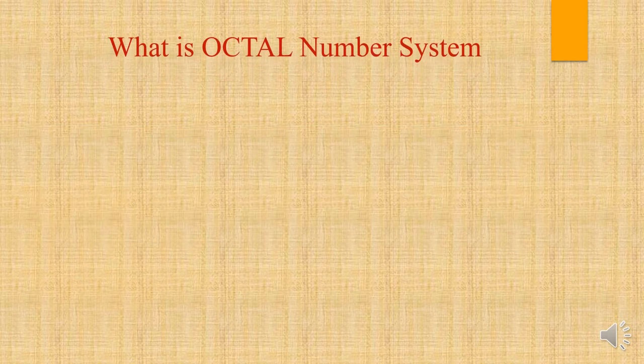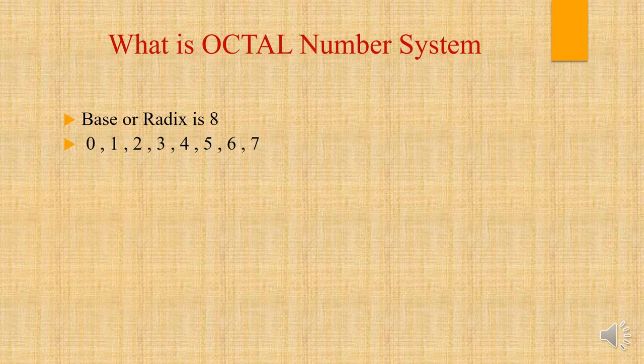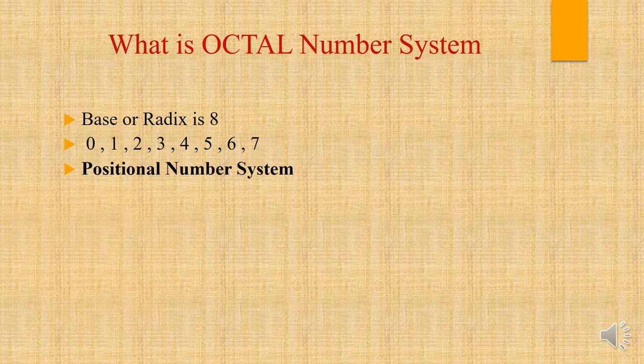The base or radix for the octal number system is 8. The octal number system uses eight digits to represent any number, and these digits are 0, 1, 2, 3, 4, 5, 6, and 7. There are no numbers or letters used above 8. It is a positional number system, just like the decimal and binary number systems.